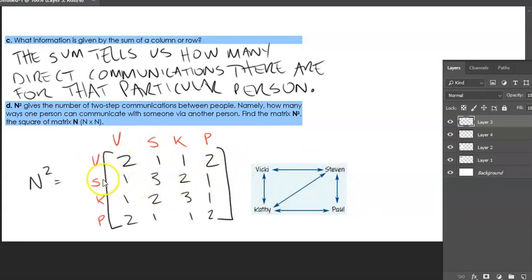The three here for Stephen to Stephen and for Kathy to Kathy, these are three just based on how popular both Stephen and Kathy are. So for Stephen to talk to himself, Stephen can go to Vicky and then back. Stephen can go to Kathy and then back. And then Stephen can go to Paul and then back. So there are three ways. Same with Kathy, Kathy to Vicky in the back, Kathy to Stephen in the back, and then Kathy to Paul and then back. So two-step communication is just via another person.